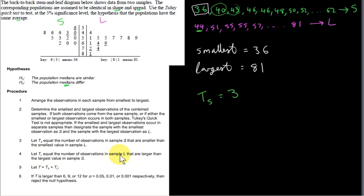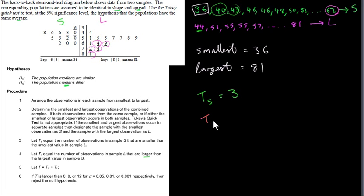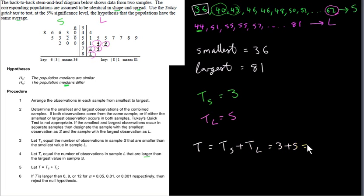Step four: TL equals the number of observations in sample L that are larger than the largest value in sample S. The largest value in sample S is 62. Looking at sample L, 61 is smaller so we skip it; then 64, 69, and all remaining values are underlined. Counting those gives TL equals 5. Step five: T equals TS plus TL, which is 3 plus 5, giving T equals 8.